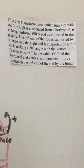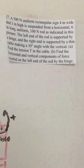The left end of the rod is supported by a hinge and the right end is supported by a thin cable, making a 30 degree angle with the vertical.